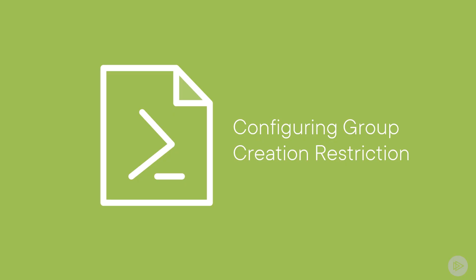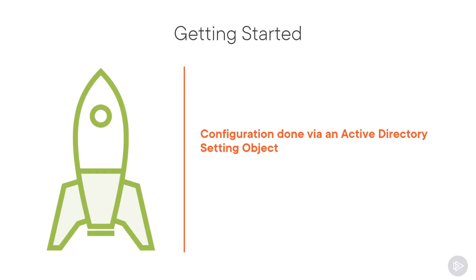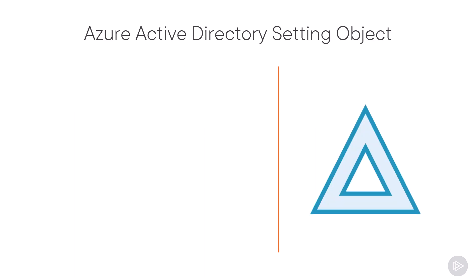Now that we know the setting, let's learn how to configure the group creation restriction. This setting is done via an Active Directory setting object. First thing we will have to do is to make sure we have our Azure Active Directory setting object, and we will have to create it.